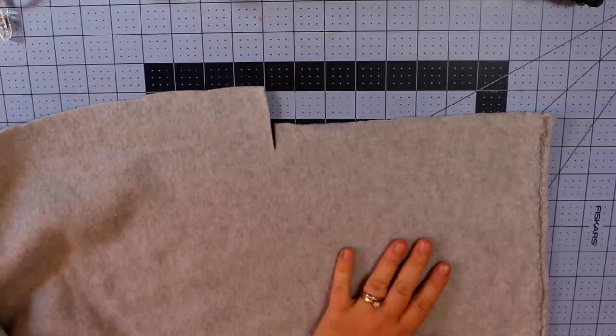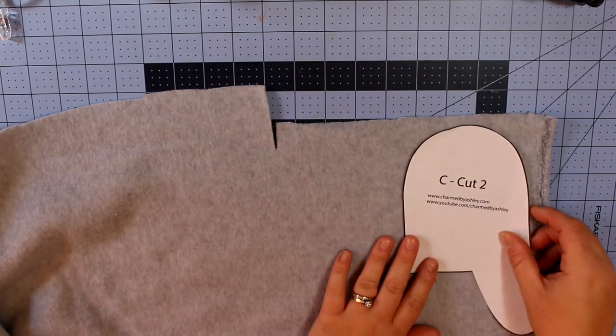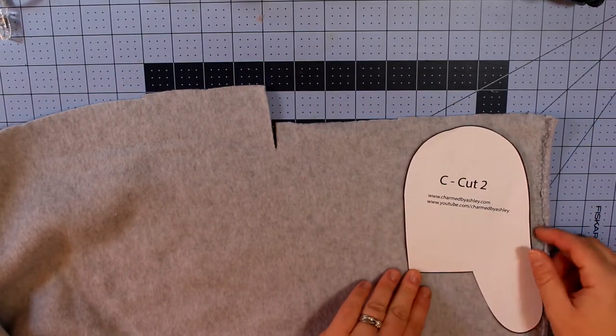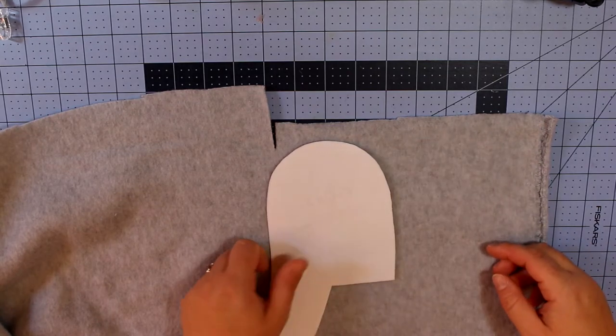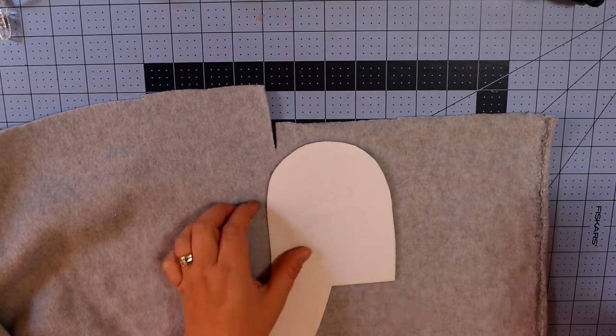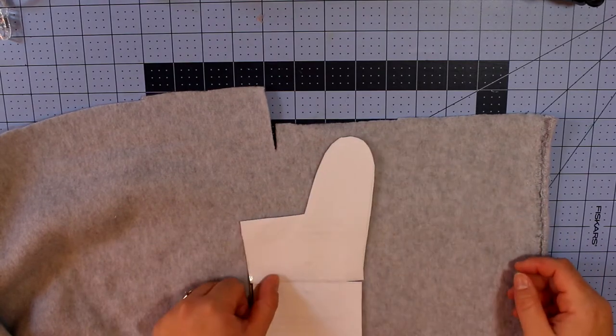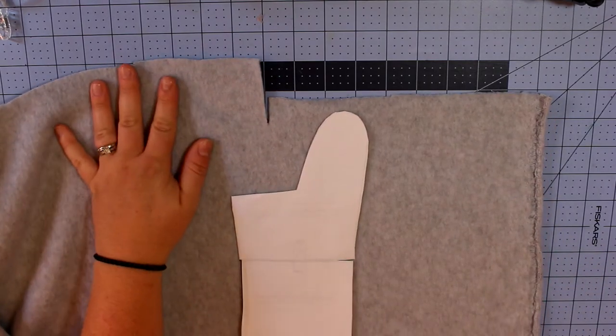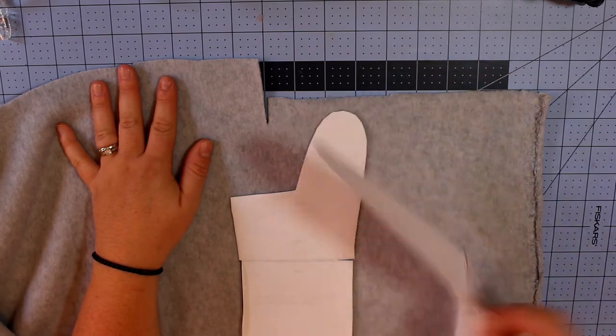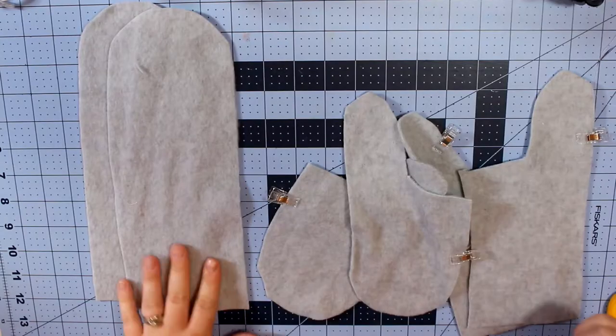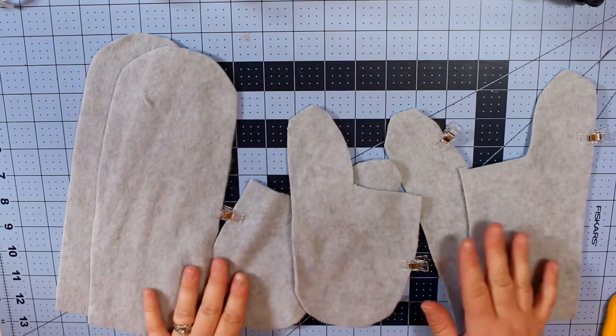When you start cutting out your thumb pieces, you're going to cut one and then you're going to flip the pattern and cut it the opposite way. If you know the right side of your fleece, then this will be easier. But if you don't know, stretch your fleece in the direction it stretches and the way it rolls is the wrong side.